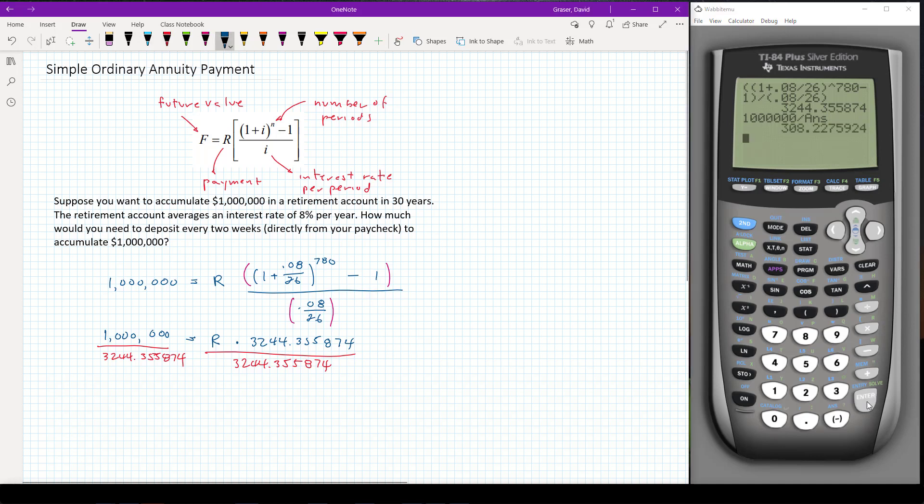So my R, my payment is approximately 308.2 and I'm going to round to the nearest penny. Often you'll round up on these things because if you want to accumulate a million, if you ever round down, you're going to come up slightly short. By rounding up in this case, which is to the nearest penny, we're going to make sure that we're going to get a million dollars. In fact, we'll probably get a little bit more than a million dollars because of the rounding. So our payment for 30 years, we're going to have to have $308.23 taken out of every paycheck over that time period.